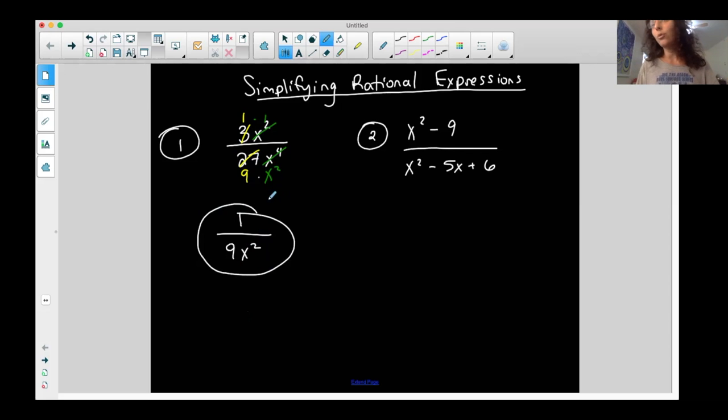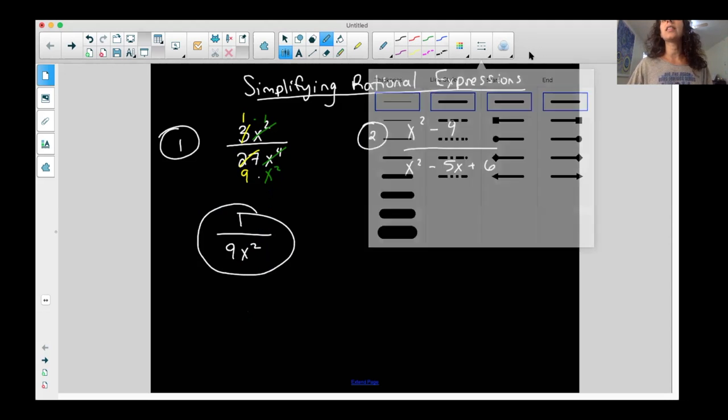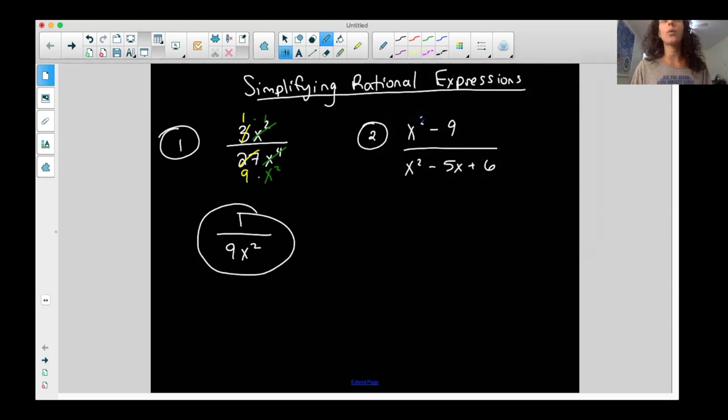You're not, you know, obviously you're not always going to have that case because a rational expression could be any polynomial in the numerator and any polynomial in the denominator like this one. Here we go. I have a binomial on top and a trinomial on the bottom. So what you want to do if you have a situation like this, I can't just cancel x squared. You can only cancel things in the numerator and the denominator if there's multiplication in between. So there's subtraction, subtraction. I cannot,